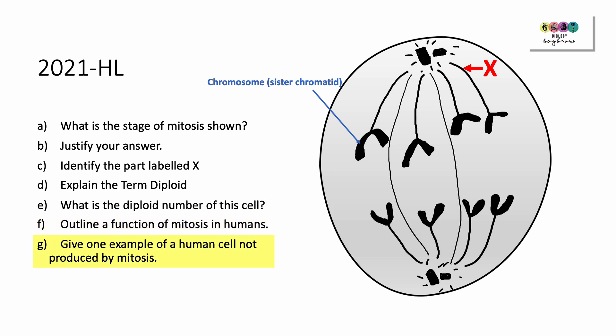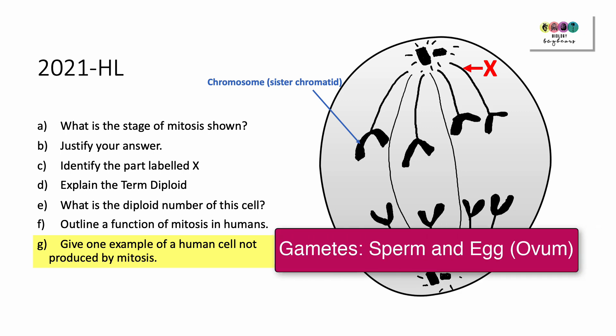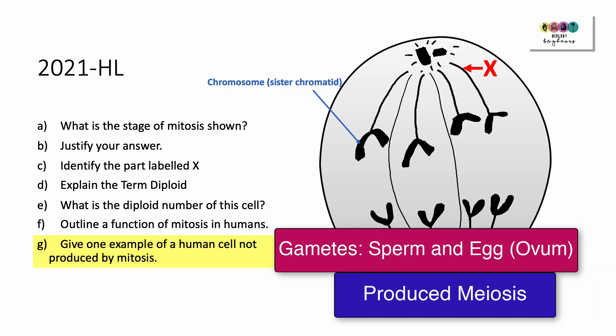Give one example of a human cell that's not produced by mitosis. The gametes — the sex cells, the sperm and the egg — they're produced by meiosis.